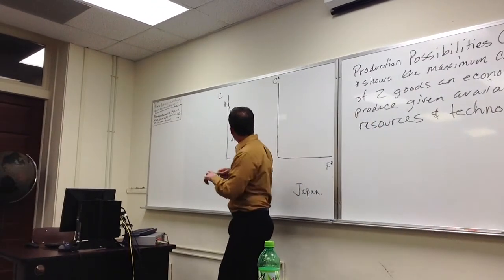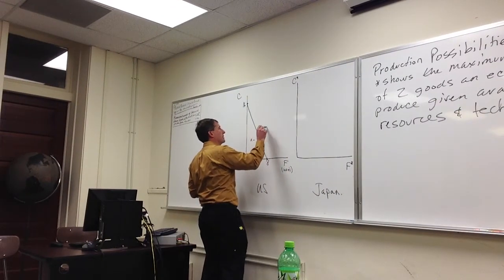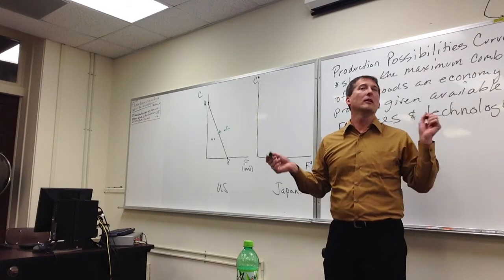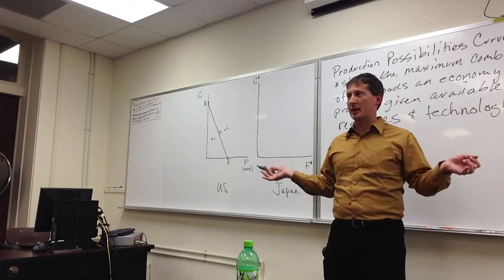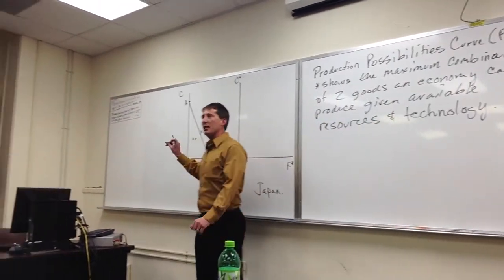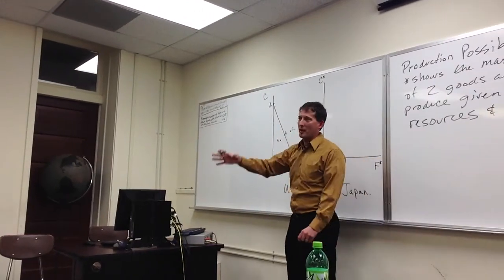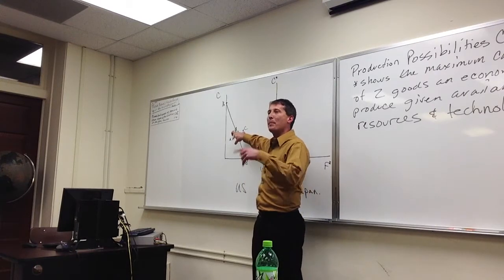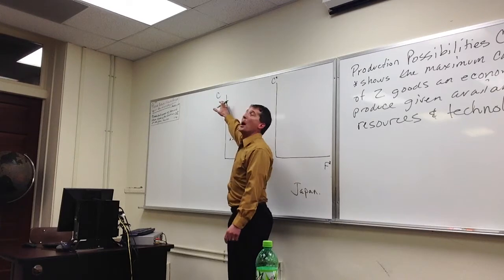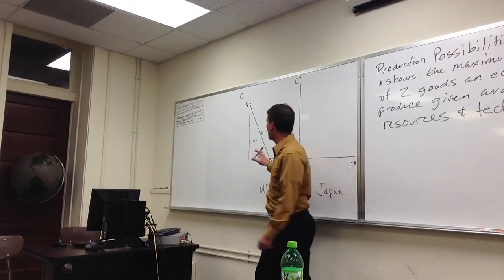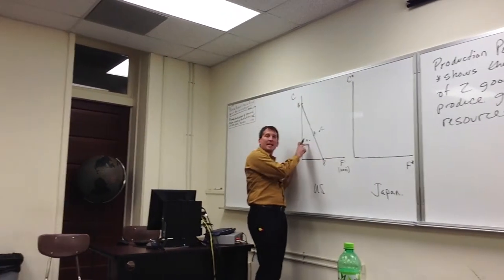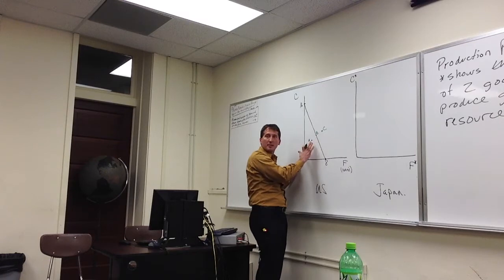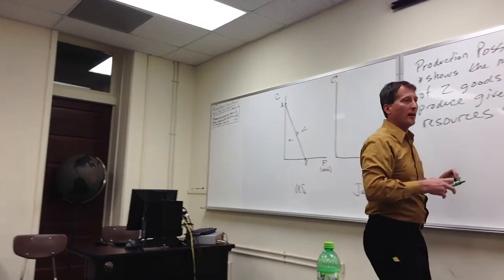What about point C? It's not attainable with the amount of resources or technology — plain and simple. Given today's technology, labor, capital, and natural resources, we cannot get to this point. The production possibilities curve reflects all possibilities. We can be inside, but we can't be outside. This whole triangular region represents all production possibilities. The edge represents all possibilities that are efficient.